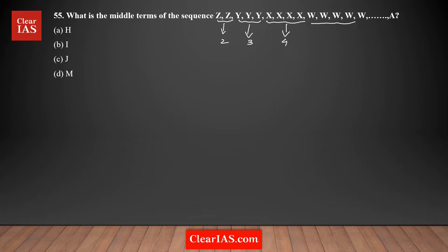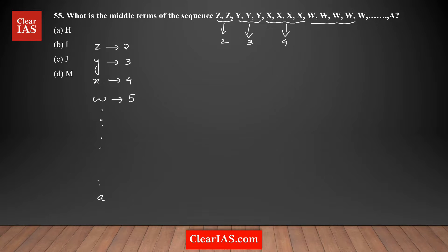So Z is there two times, then Y is three times, then X is four times, then W is five times, and it goes on like that. There are 26 alphabets in total. Z is repeating two times, Y is three times — the first letter repeats two times, the second three times, and so on.